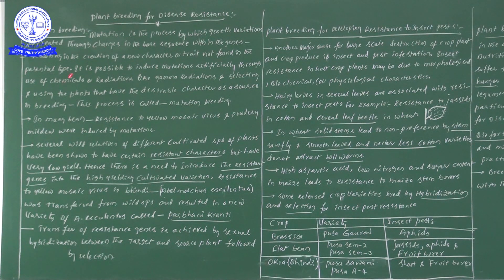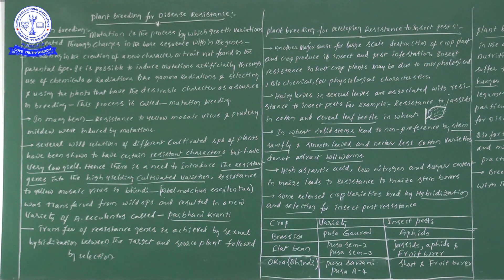After completion of mutations in a particular plant, that plant can be taken as a source of desirable characters in breeding. When that particular plant has desirable characters, it can be taken as a source in breeding — that is what we call mutational breeding.